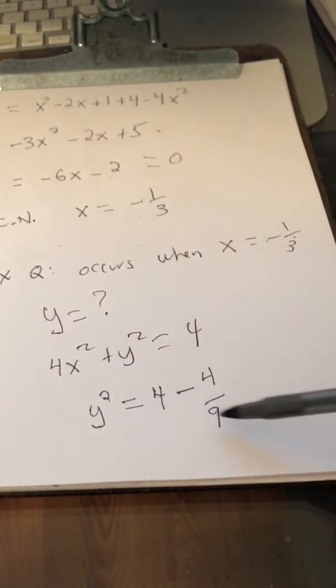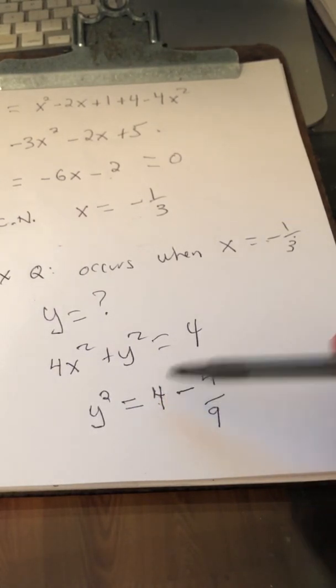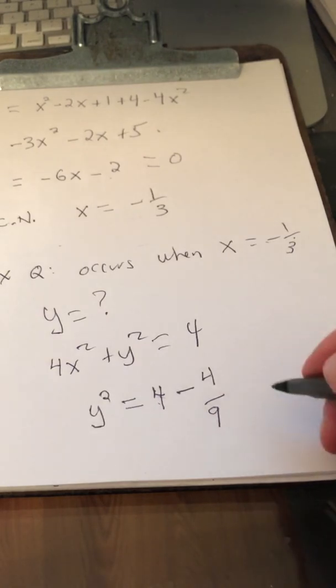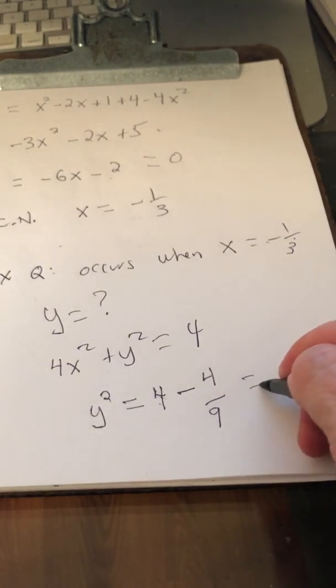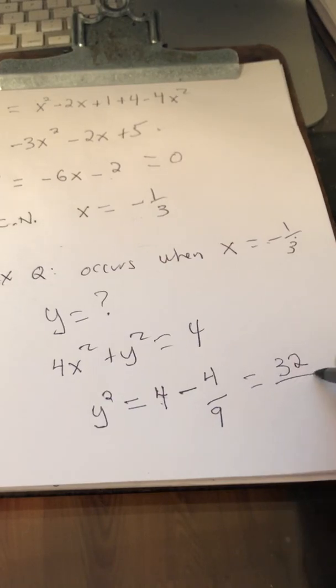And let's see, 4 is 36/9. 36 minus 4 is 32. So we get 32/9.